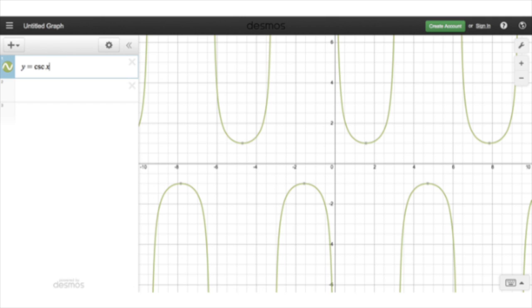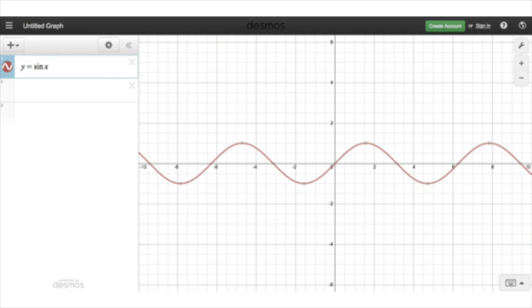In terms of domain and range, you guys have dealt with that before too. For the sine curve, the domain is all real numbers. All real numbers. The range is limited, however. For the parent function, it's limited from negative 1 to 1, and it includes those.